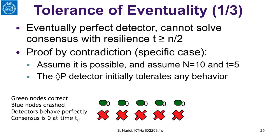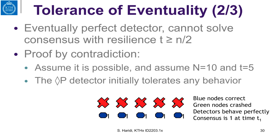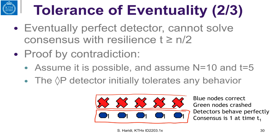Now let us take the other 5 processes — the blue processes. They are half of the processes in the system, so they can tolerate failure of half. We assume now that the blue processes are correct and the green processes have crashed. The failure detector behaves perfectly, and at some time t1, they decided on the value 1.